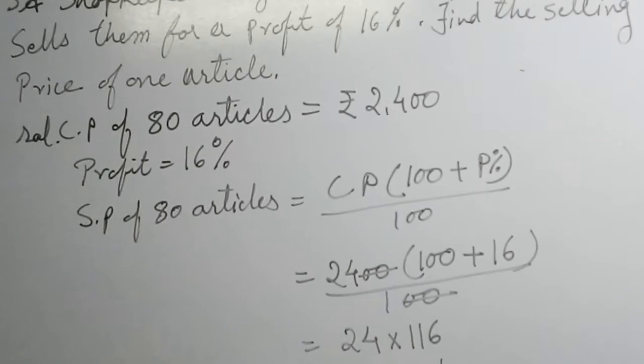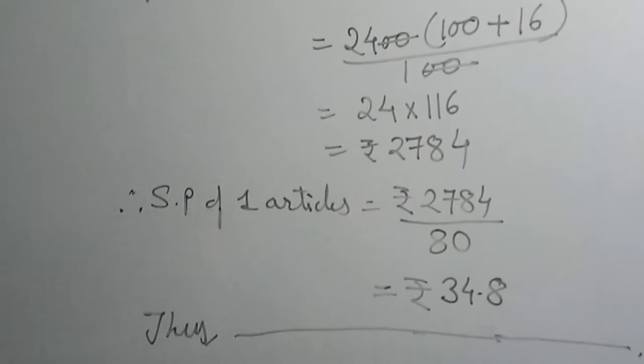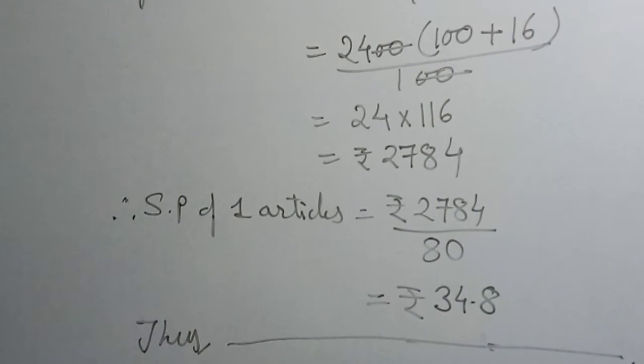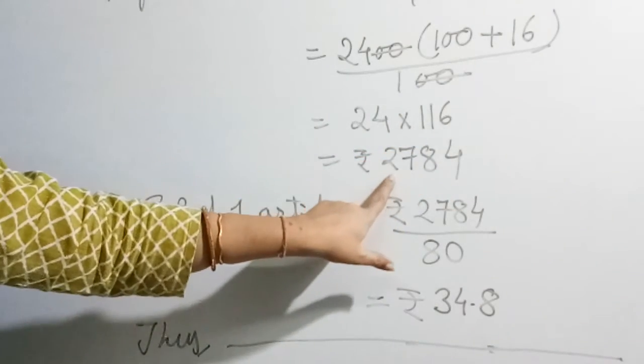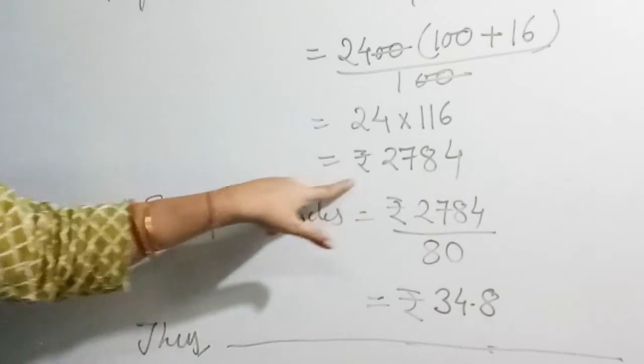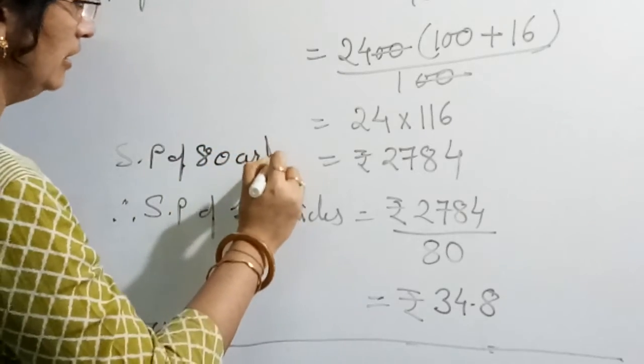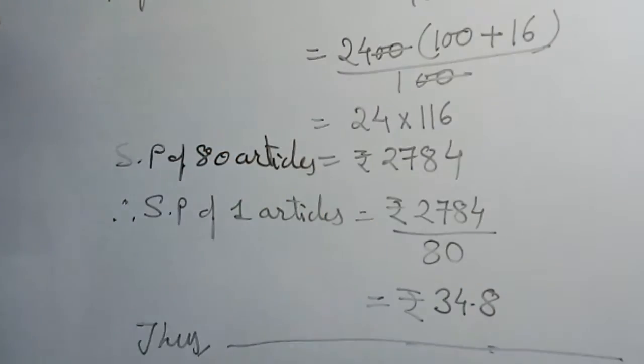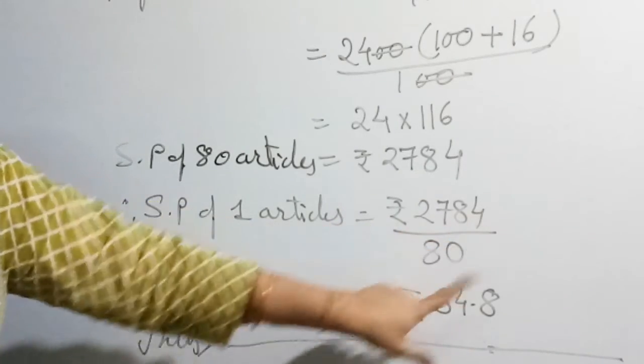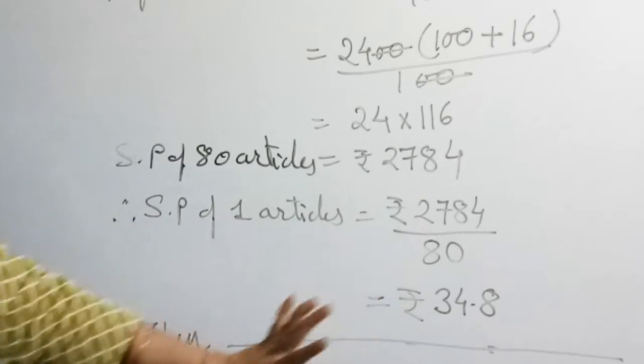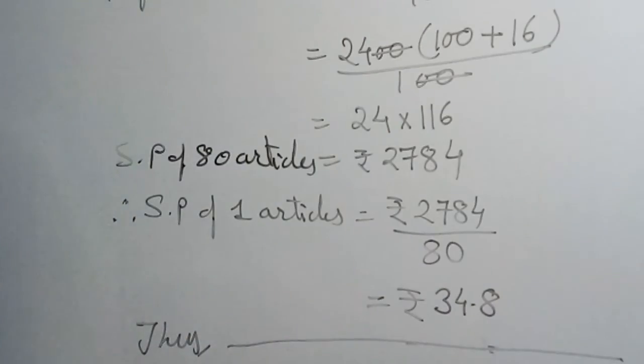24 multiplied by 116 gives the answer 2784. This is our selling price of 80 articles. Therefore selling price of one article equals 2784 rupees divided by 80. Divide properly - you will get the answer as 34.8.